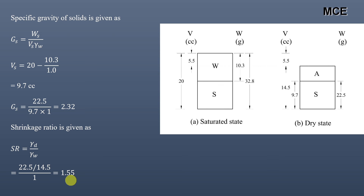This is how you calculate the shrinkage limit, specific gravity of solids, and shrinkage ratio using both the direct formulas and the phase diagram of the soil. I hope this solution video was clear and effective. If you found it helpful, please subscribe to the channel and share the video. Thanks for watching and stay tuned.